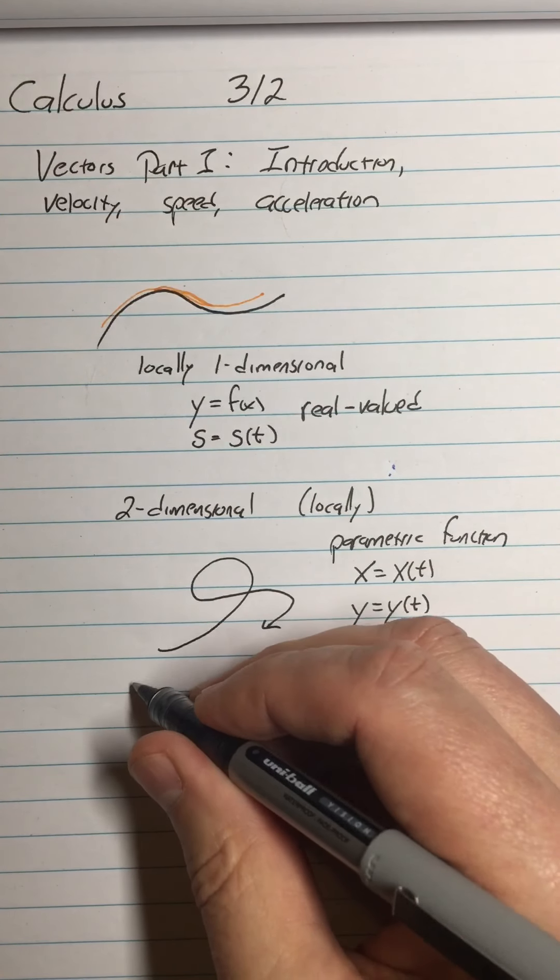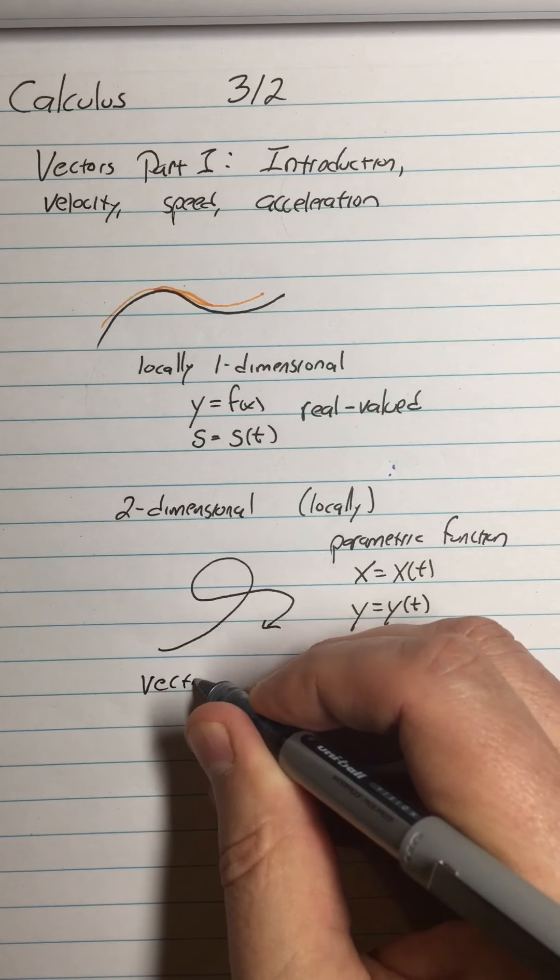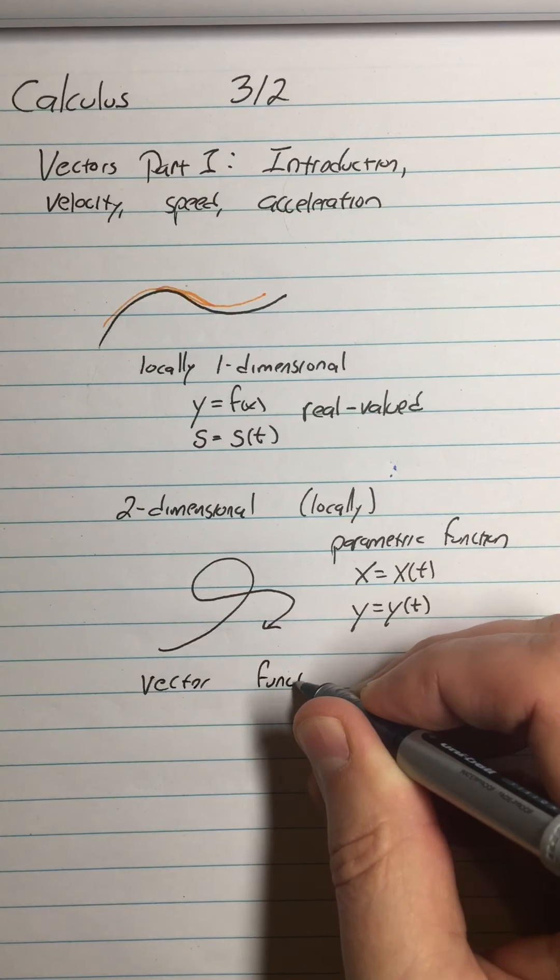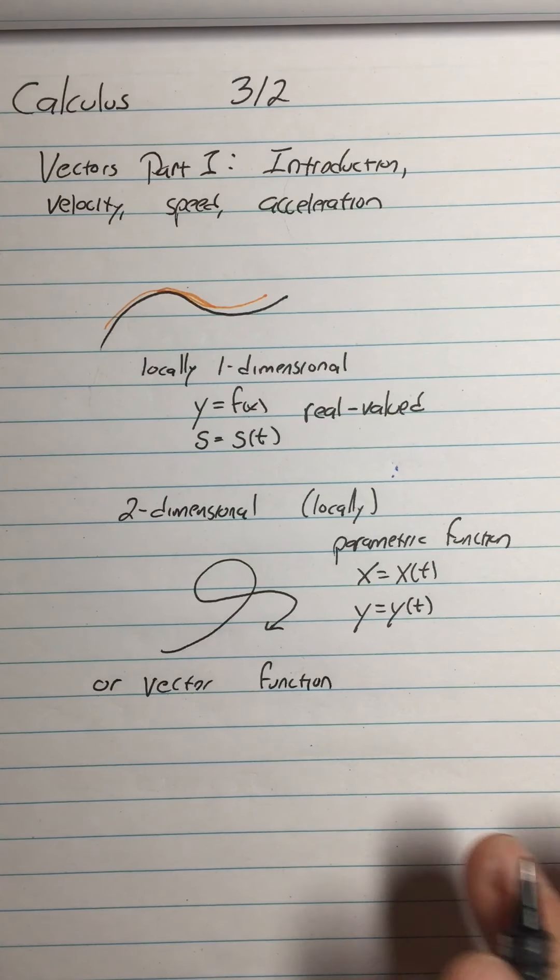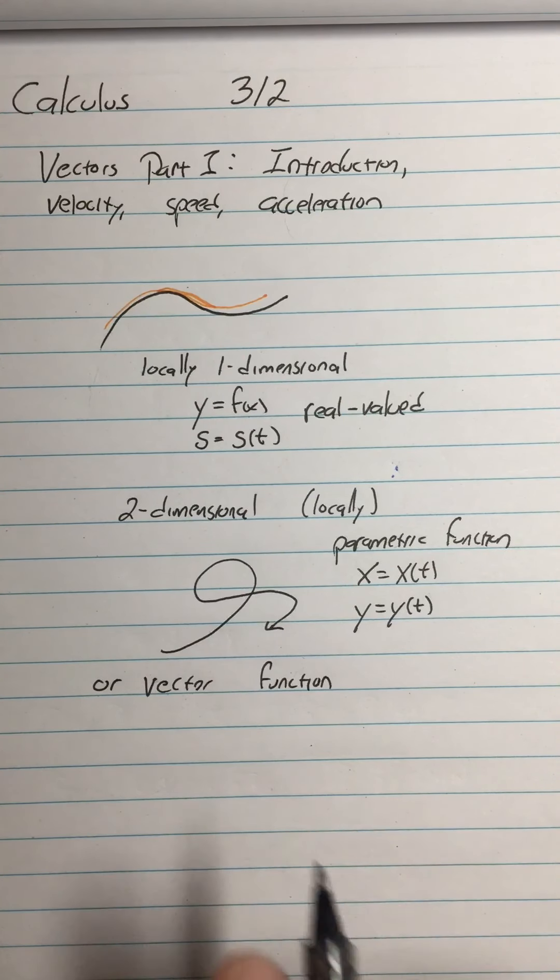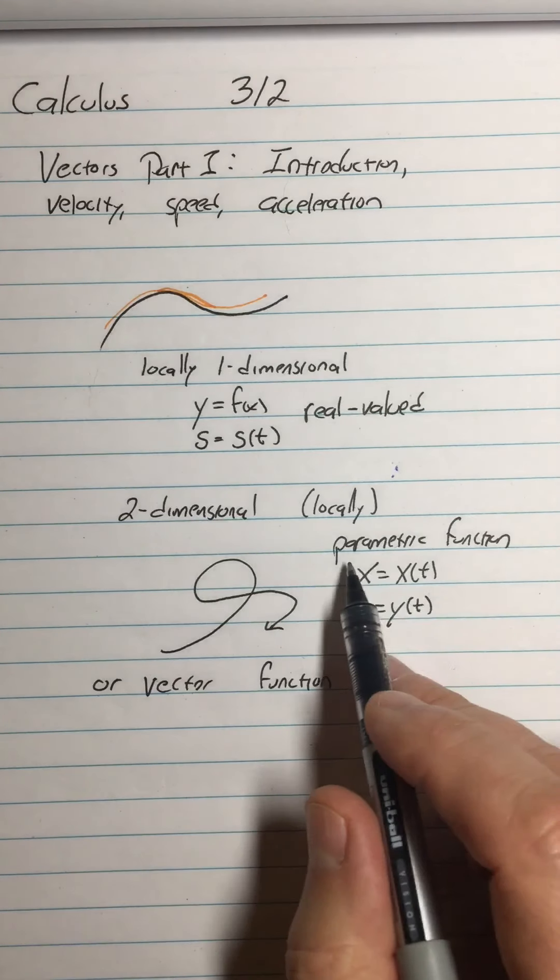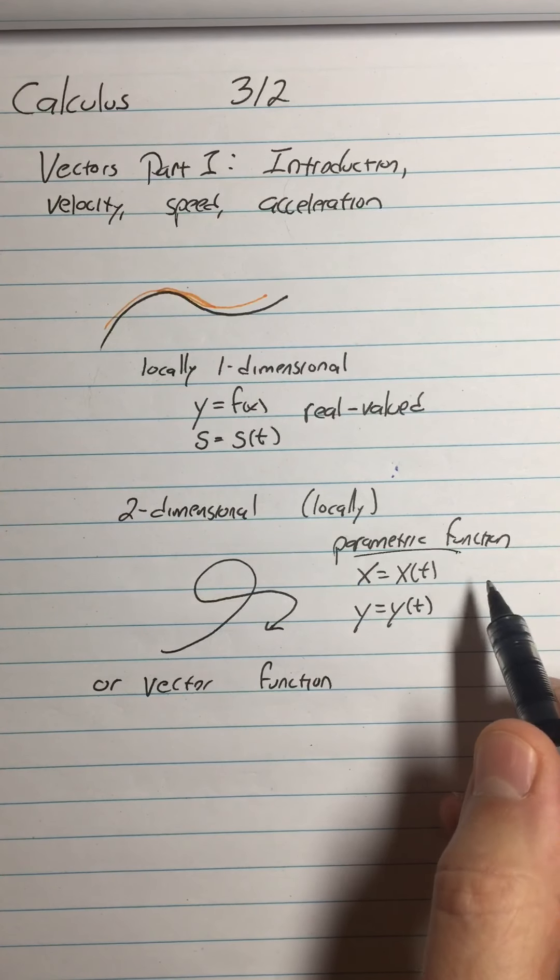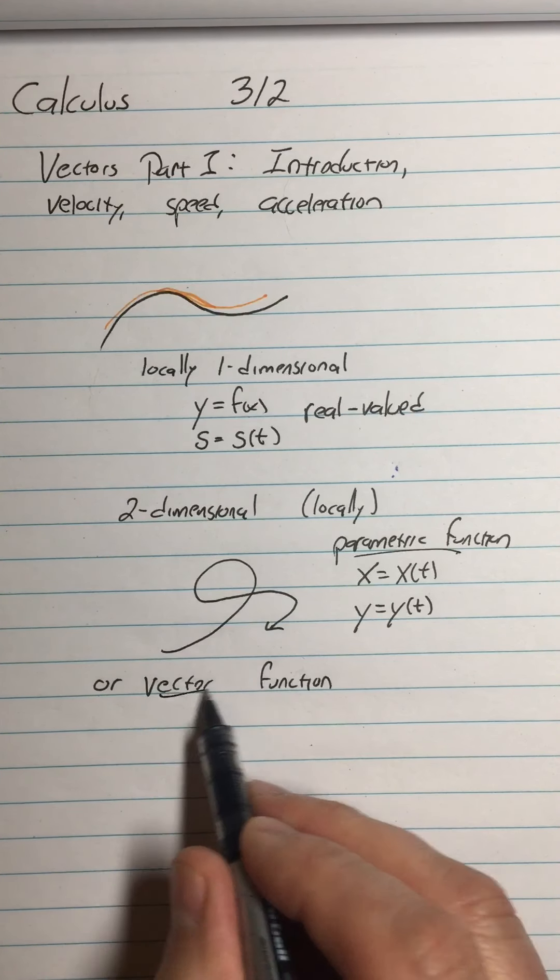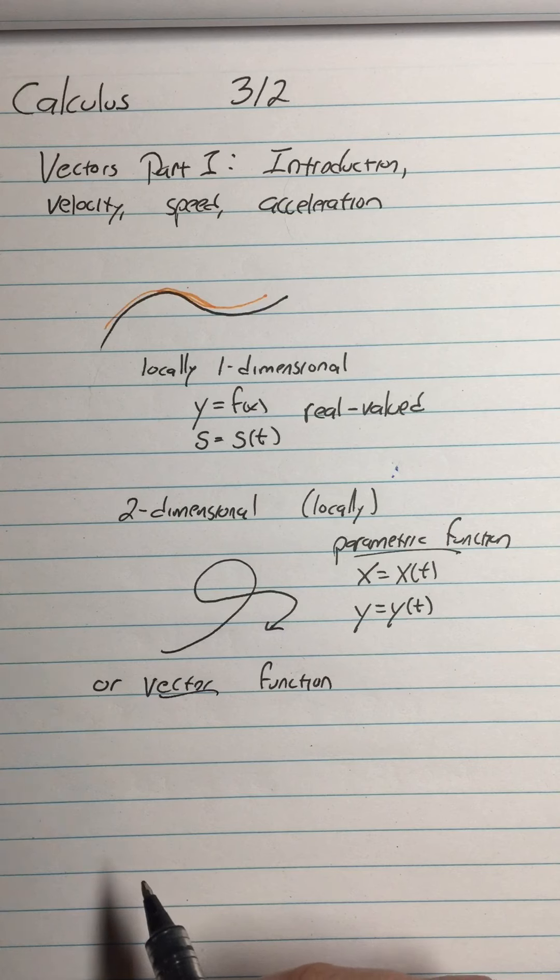So the other way you can do that is with something called a vector function. So that's what we're going to talk about now, or vector function. So the context in which we're going to do this is we're going to start looking really at locally two-dimensional motion. Instead of just using parametrics we're going to see it's very closely connected to parametric functions but we're gonna add something new called a vector and have vector functions.